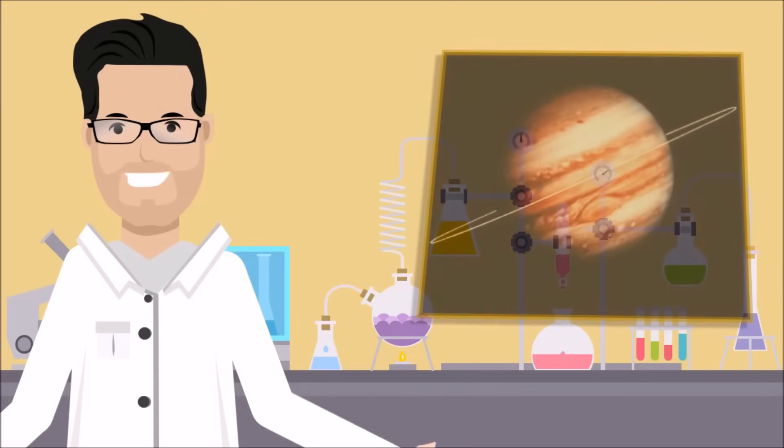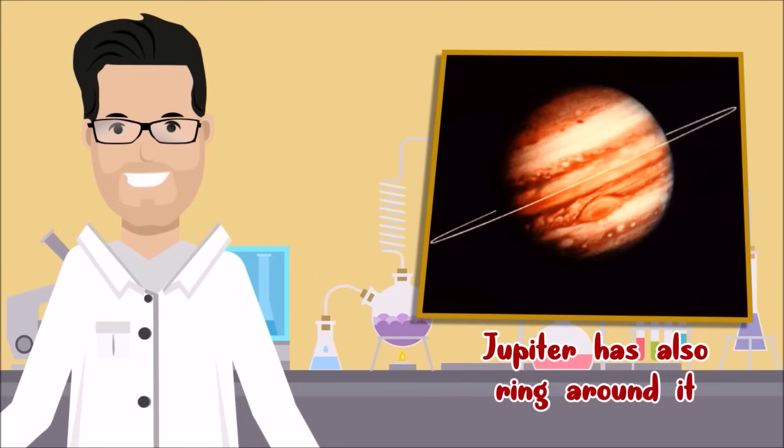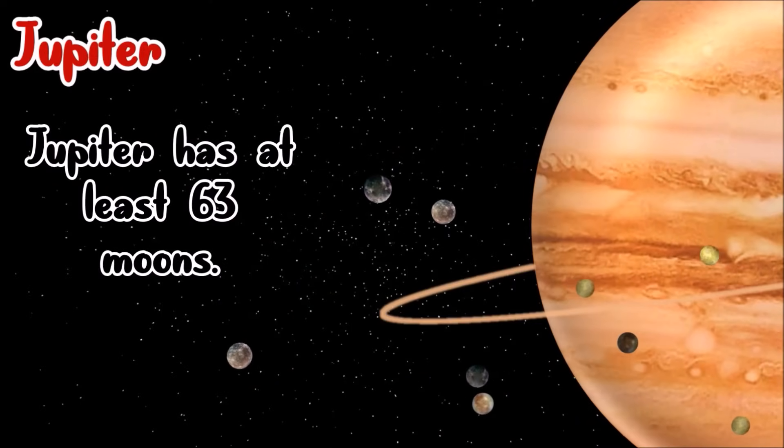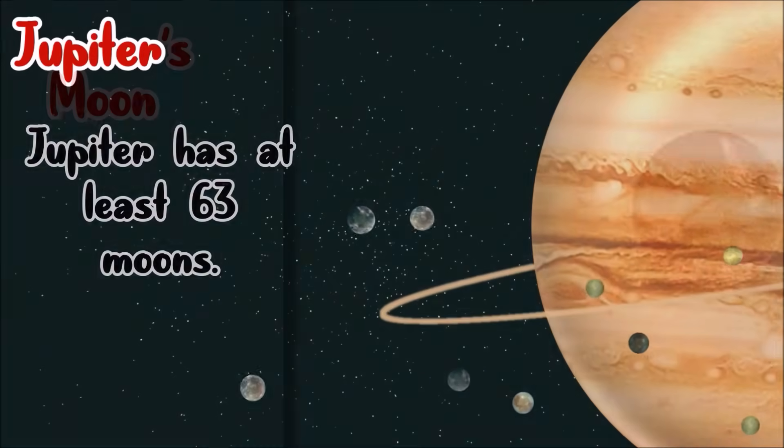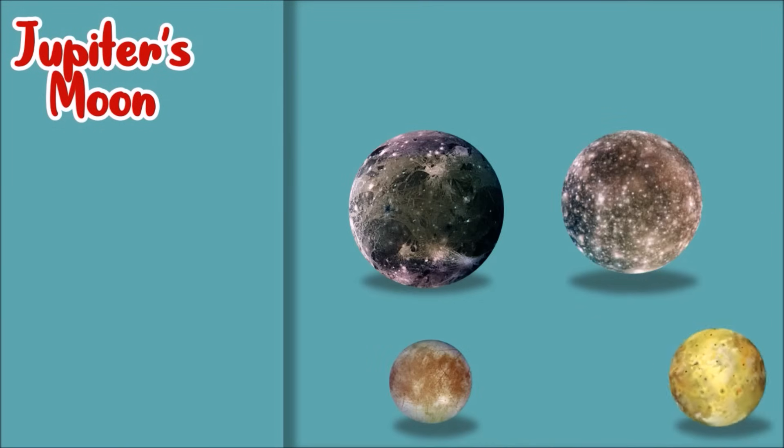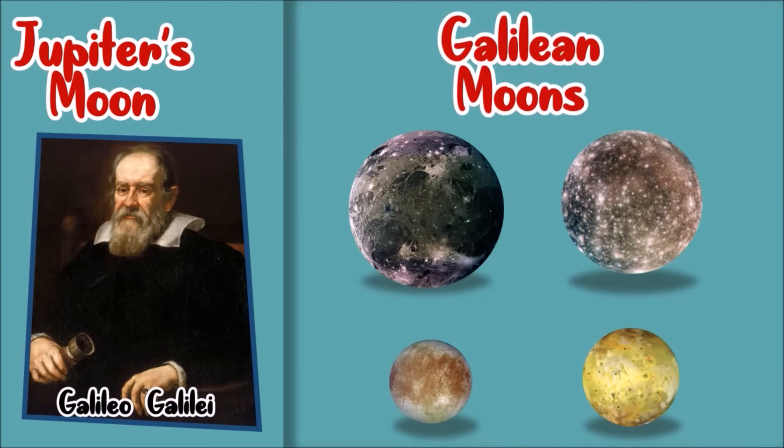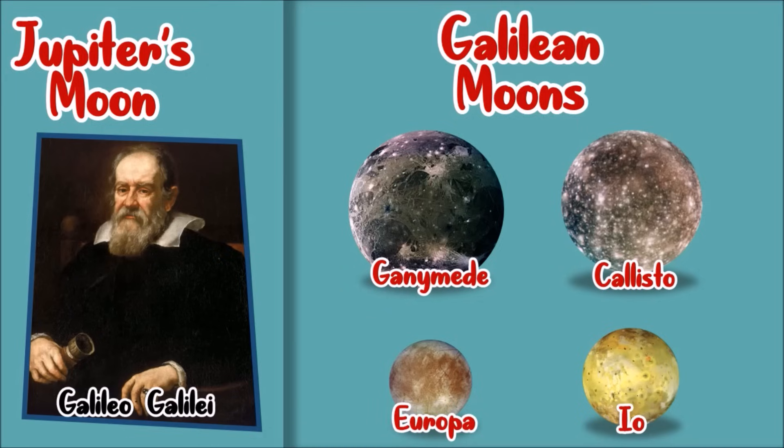Did you know that Jupiter has a very small, faint dust rings around it? Jupiter has at least 63 moons. Four moons were first observed by Galileo Galilei and were named Galilean moons. Some of the moons of Jupiter are Ganymede, Callisto, Europa, and Io.